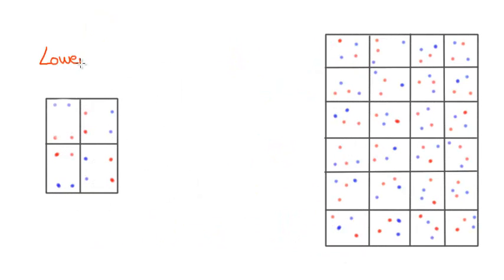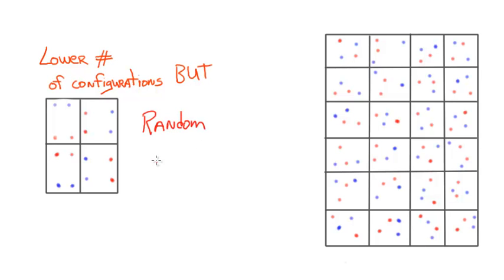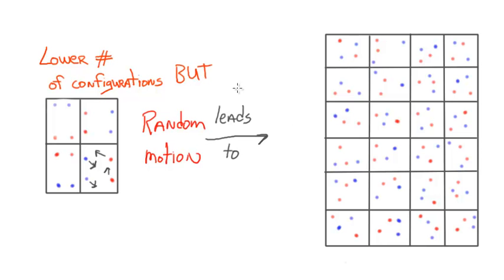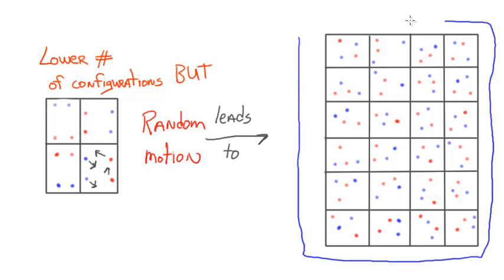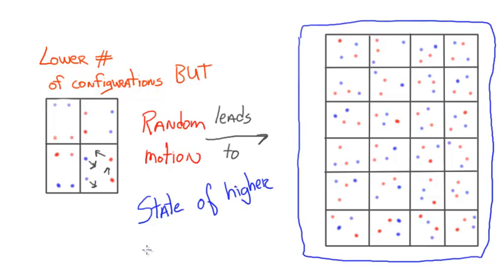I want to just talk briefly first about configurational stability. When we're thinking about mixing, we can say that in general, if you have a system — here in my example I have a two-particle system — on the left I'm representing four possible configurations where the particles are not mixed. We know that through random motion, the particles are very likely to be found in a mixed state. So it would be much more probable for these two particles to be found in one of the mixed configurations on the right-hand side, a state of higher configurational stability, than in the more constrained states of lower configurational stability on the left. In general, random motion leads to states of higher number of configurations.